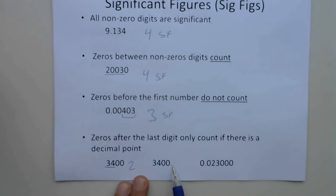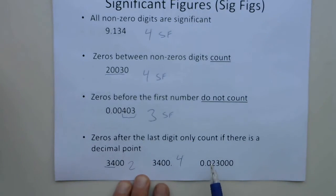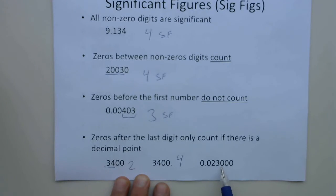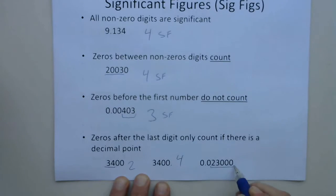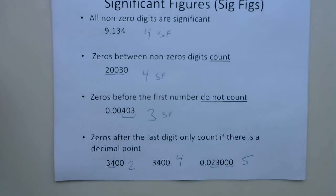But with the same number 3,400 written with a decimal point, that decimal point is there for a reason — it's telling us that this is measured to the nearest one, so this would have four significant figures. And in a number like 0.001200, zeros before the first digit do not count, but zeros after the last digit do count since there's a decimal point. So that number has five significant figures.